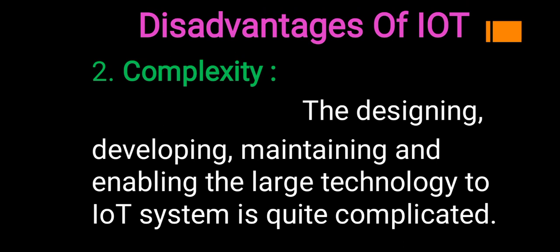To summarize today's session on the Emerging Technology chapter: we covered what IoT means, the various advantages of IoT, and the disadvantages of IoT. IoT uses the internet to connect all devices and perform various operations. Please write notes on the points discussed today, and if you have any doubts, you can ask questions in the group. Thank you.